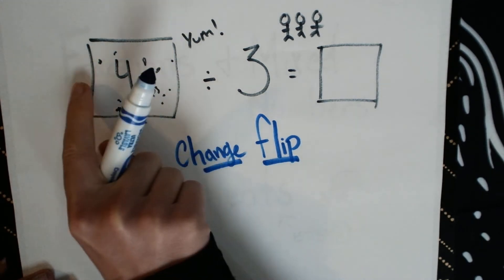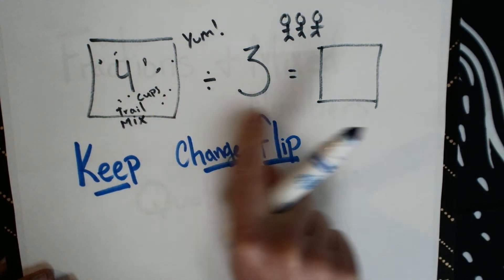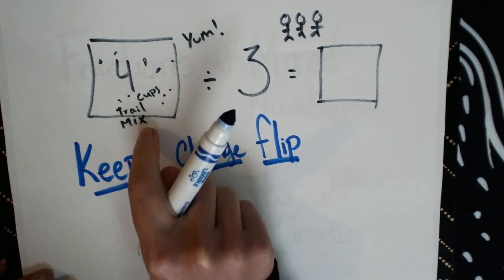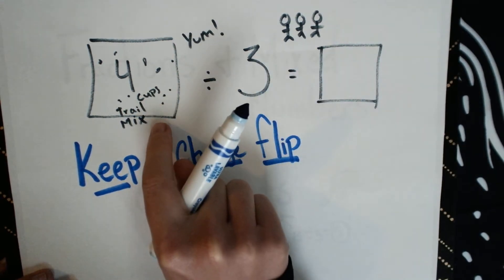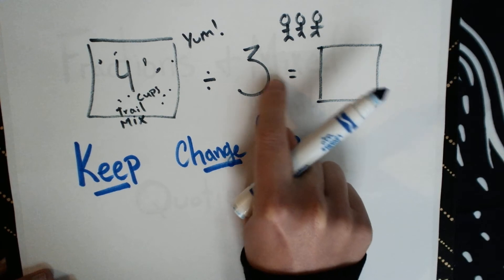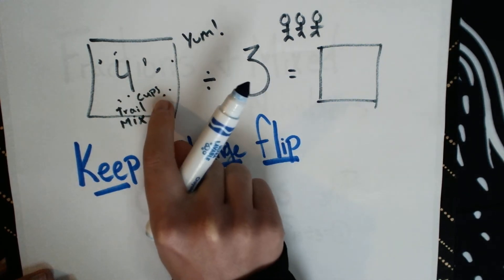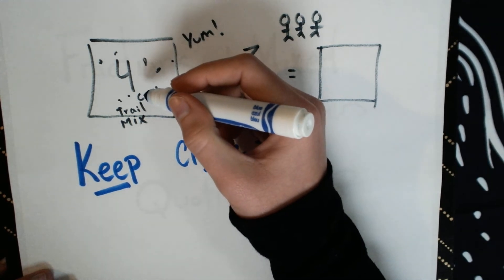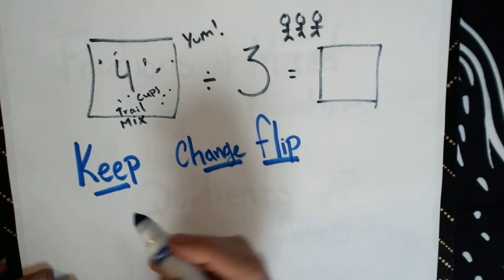The first thing that you do, after you've made your choice about how to arrange your division story, we know that we're going to divide the trail mix, not the people. We're dividing 4 by 3. We have 4 cups of trail mix shared between 3 people. We're going to keep that first digit the same. That 4 is our keep.